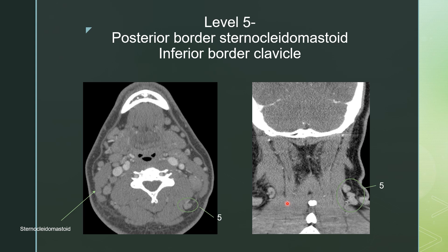Level 5 lymph nodes run from top to bottom and have to be behind the posterior border of the sternocleidomastoid. Any part of a lymph node that is under the sternocleidomastoid gets labeled as the more anterior lymph node station. So a node partially under the muscle would be level 2, while one fully posterior would be level 5.